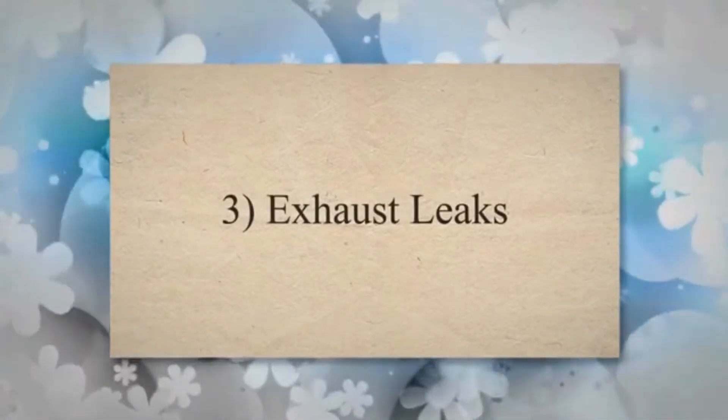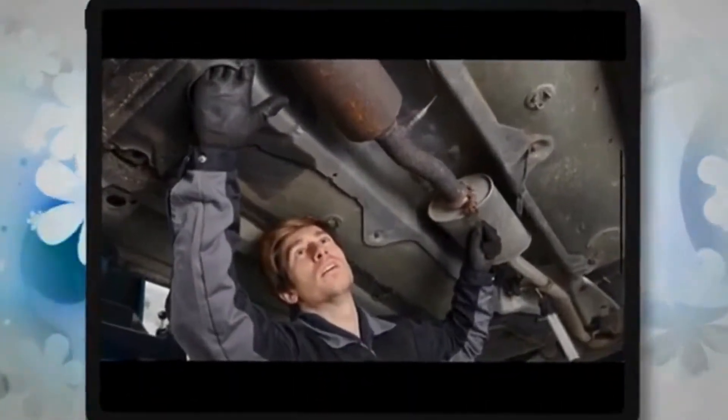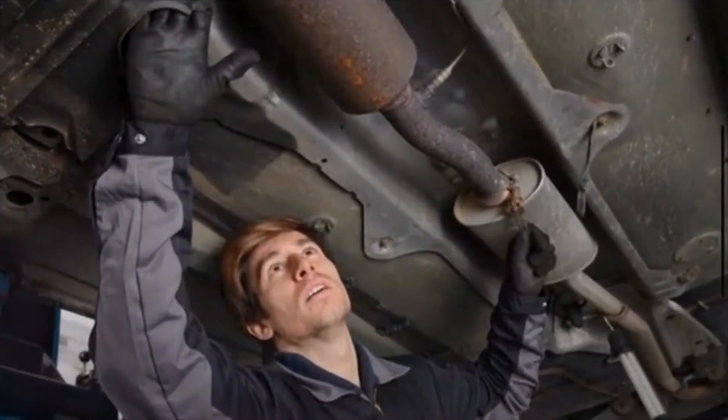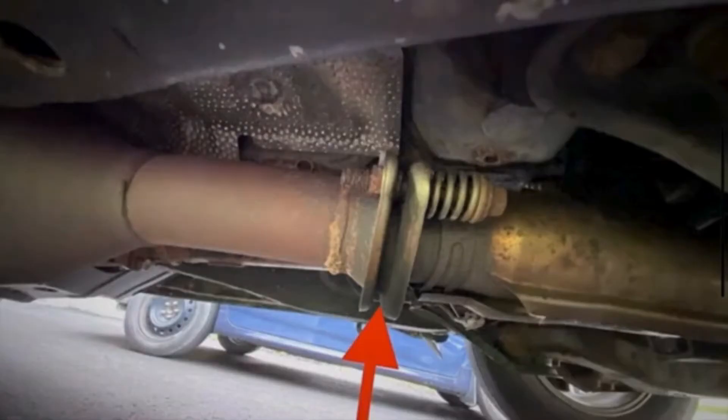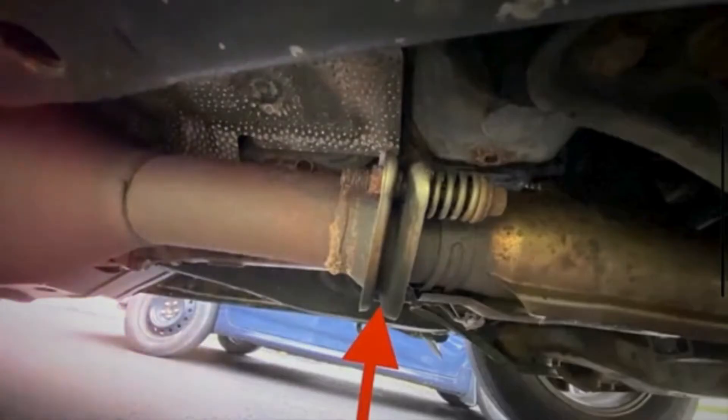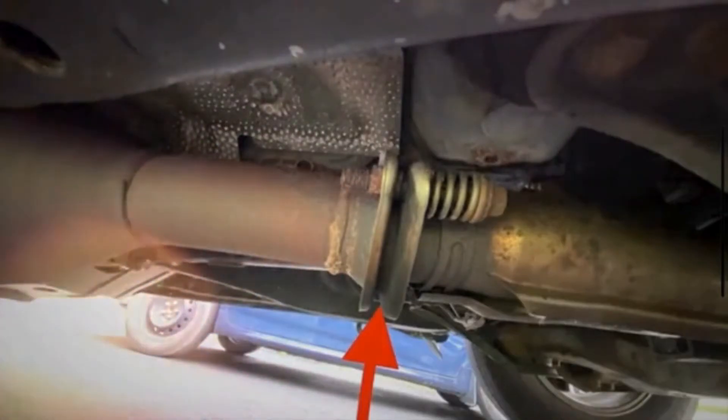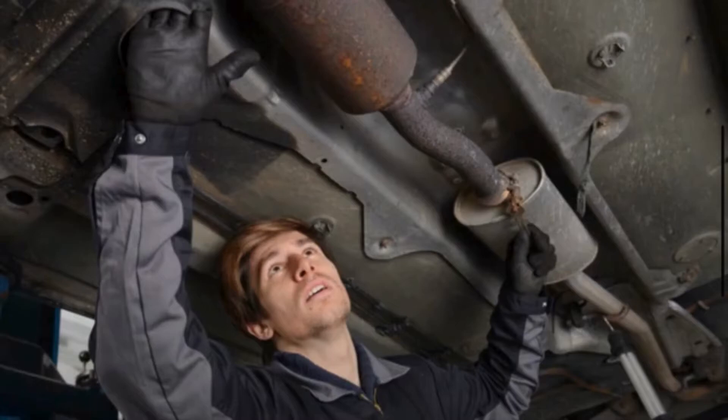3. Exhaust Leaks. Leaks in the exhaust system before the catalytic converter can introduce outside air into the exhaust stream. This extra oxygen can confuse the downstream oxygen sensor and make it appear as though the catalytic converter is not effectively reducing emissions.